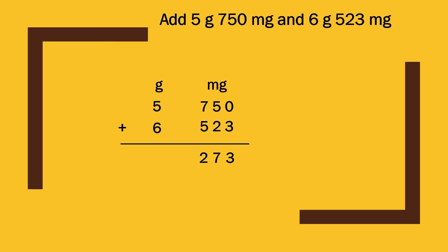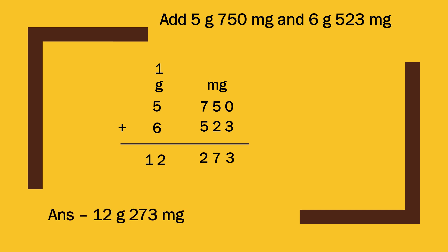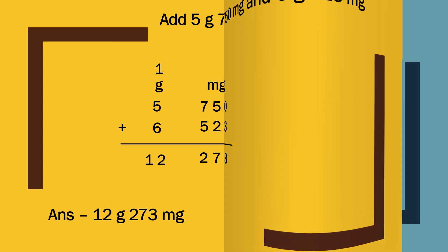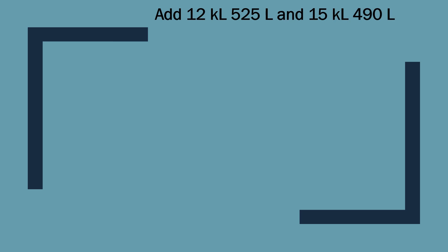7 plus 5 equals 12 — write 2, carry 1. Then 5 plus 1 is 6, 6 plus 6 is 12. So our answer is 12 gram 273 milligram. Now let us add one more: add 12 kilolitre 525 liter and 15 kilolitre 490 liter.